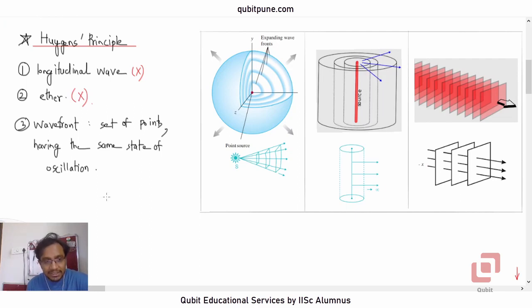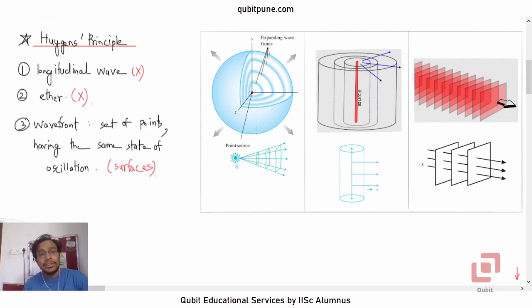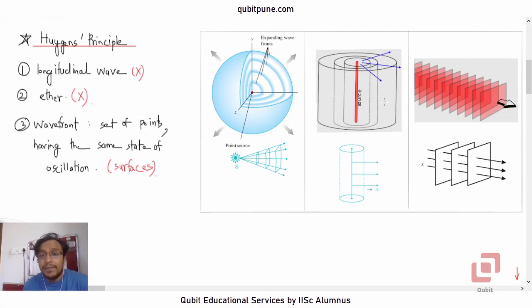Wavefronts are essentially surfaces. If you have a point source, then the wavefronts are spherical. If you have a linear source, like a slit, then the wavefronts are cylindrical.